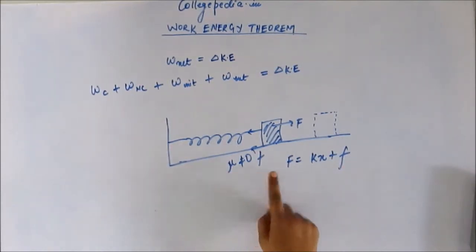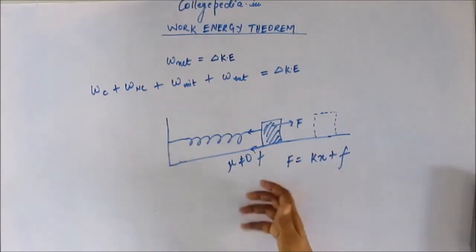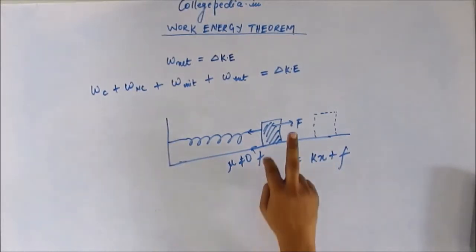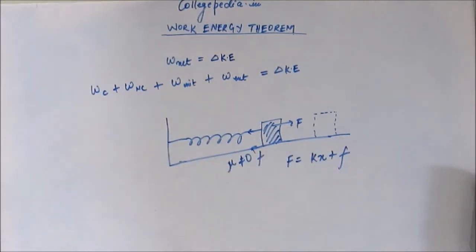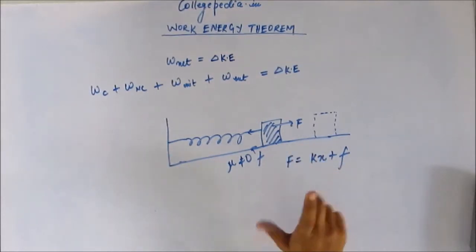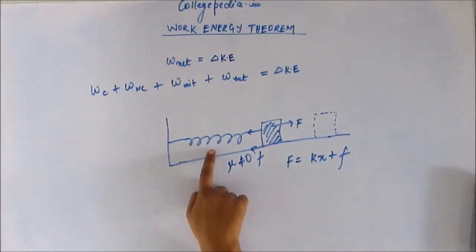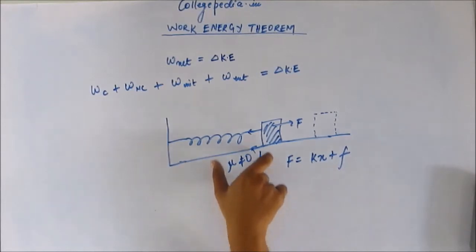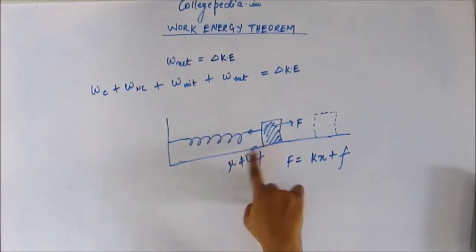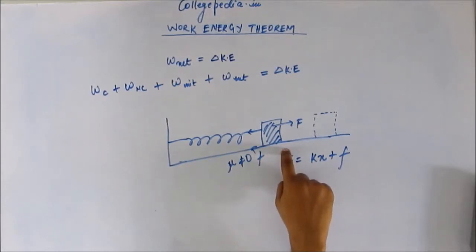The work we have done accomplishes two things: first, it overcomes friction, so some work is lost as heat due to friction; and second, it stores potential energy in the spring-block system. No kinetic energy is given to the block. The total work done equals exactly the sum of the potential energy stored in the spring and the heat loss due to friction.